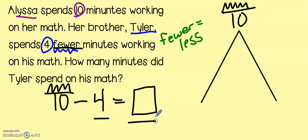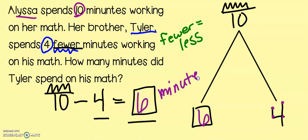Now, the four and our missing number need to go at the bottom. We can put them wherever we would like. Now, I'm going to use my touch points. You may use a different strategy. 10, 9, 8, 7, 6. So, Tyler spent six minutes on his math that day. Alyssa spent 10 and Tyler spent six.